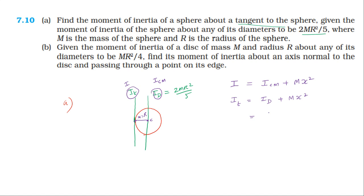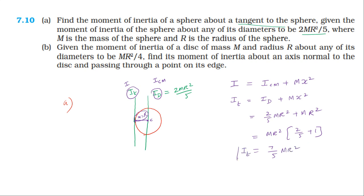The moment of inertia about the diameter is 2mr²/5. The distance x between the tangent and the diameter (center of mass axis) is r. So, I_tangent = 2mr²/5 + mr² = 7mr²/5. Therefore, the moment of inertia about the tangent is 7mr²/5.